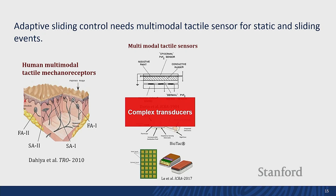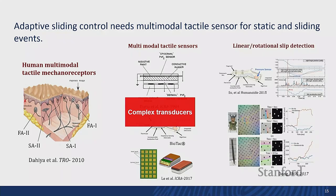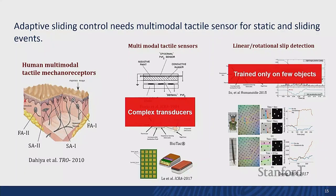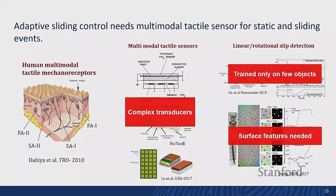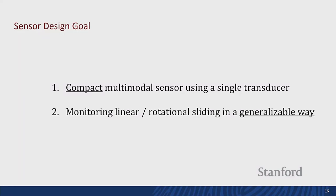We want to use linear and rotational slip, so the tactile sensor should differentiate those two slip modes. However, previous works only trained on a small set of objects which may not generalize. Gel-based sensors can do such differentiation but may need surface features to track. My sensor design goals are: first, design a compact multimodal sensor using a single transducer; and second, monitor linear and rotational slip in a more generalizable manner.